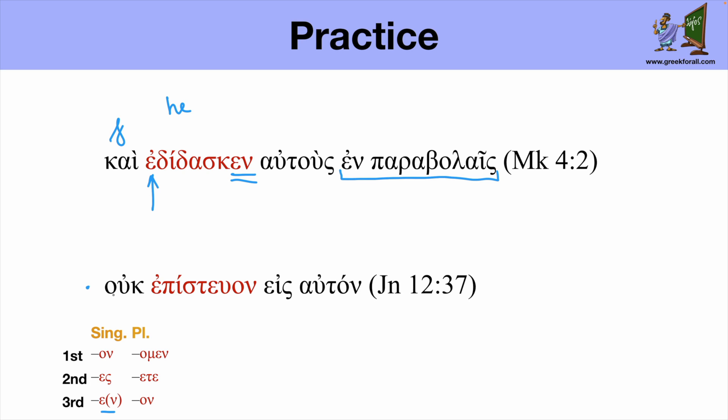So another example from the Gospel of John. Uk episteon eis auton. So here from the verb pisteo I believe. So we see the augment again. Now we check the ending and we find it in the third person plural they. And this is from the context. We know that people they were not believing in him.